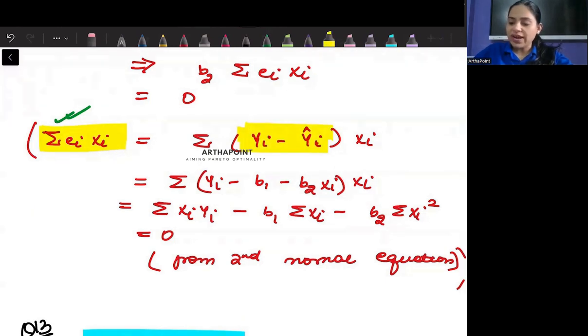And instead of Yi hat, you can just go ahead and write down B1 plus B2 Xi, and then you can just try to open this up.